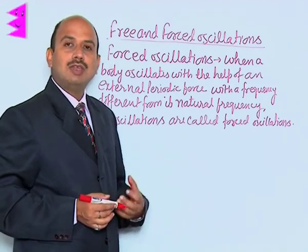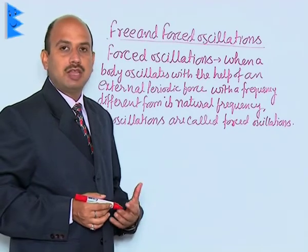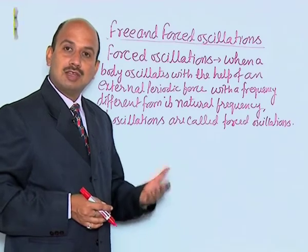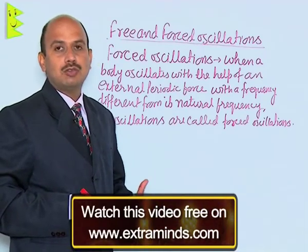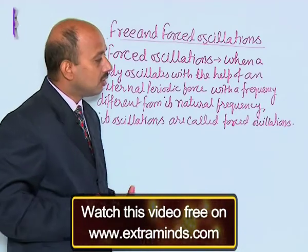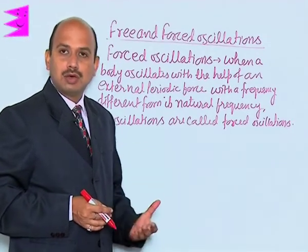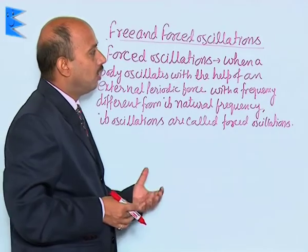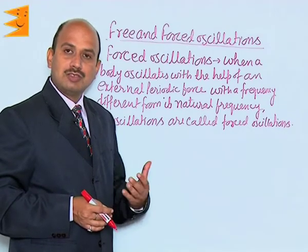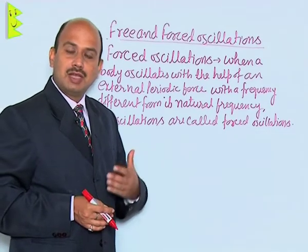When the body is initially displaced and oscillated with the help of the periodic force, the body first oscillates with its natural frequency. But after some time its oscillations settle down and the body gains the frequency of the driving force — it means the natural frequency slowly dies out. When the body starts oscillating with the frequency of the driving force, amplitudes are smaller and these oscillations are called forced oscillations. The frequency of the oscillation due to the driving force is different from the natural frequency.